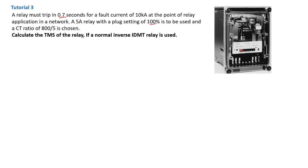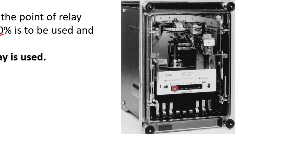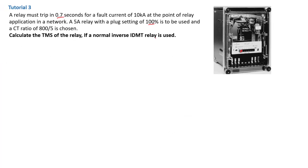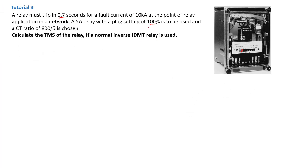The IDMT relay on screen already has the plug settings set at 1, which is 100 percent. In the previous tutorial I explained the significance of these plug settings — you can pull out the plug and put it into different tappings, which determines the amount of current needed to energize the relay coil. Right now we have a tapping at 100. If you want to know more, please watch my tutorial on IDMT relay characteristics curves.